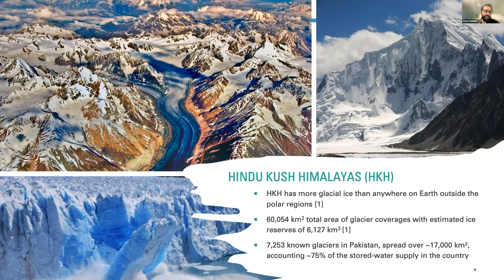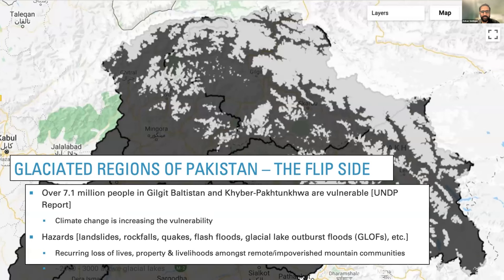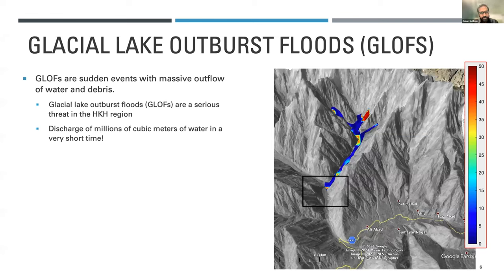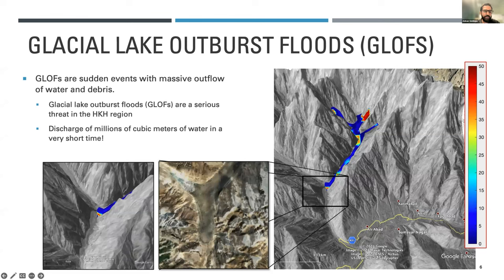The flip side is that many people inhabit valleys within these mountains, meaning any hazard triggered by climate change can affect those people. In the Gilgit-Baltistan and KP regions in Northern Pakistan, there are already 7.1 million people living in vulnerable regions. With increasing risks of landslides, rockfalls, earthquakes, and flash floods, there has been a recurring loss of lives and property, particularly in the last decade. I will focus a bit more on GLOFs here, and take a moment to explain what I exactly mean by them with an example.